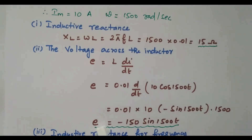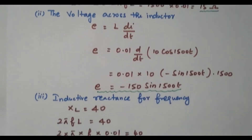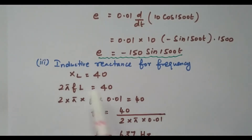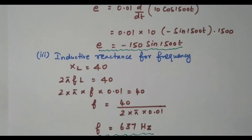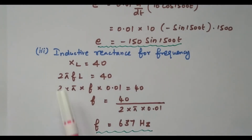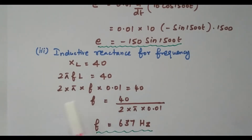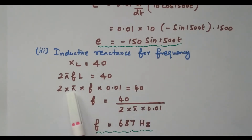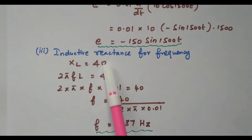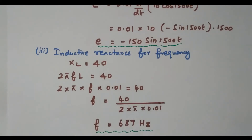Now we find the frequency for inductive reactance equal to 40 ohms. XL = 2πfL = 40. The L value is 0.01. So f = 40 / (2π × 0.01) = 637 Hz. For this inductive reactance value of 40 ohms, the frequency will be 637 Hz. We have now calculated all parameters for the second problem.